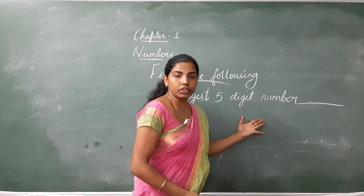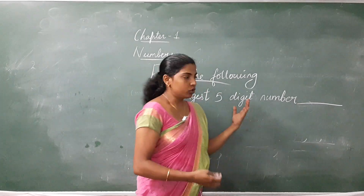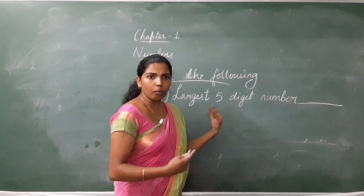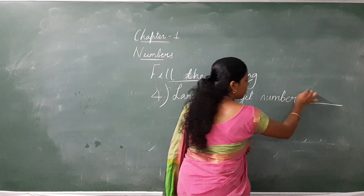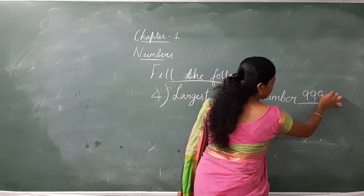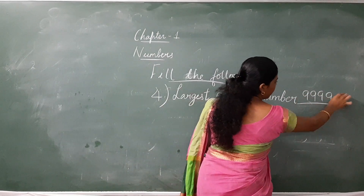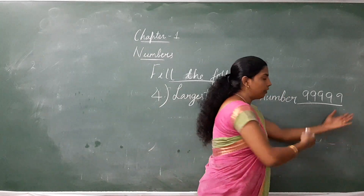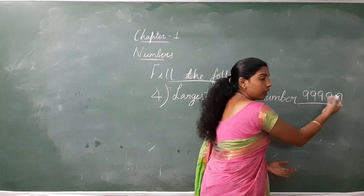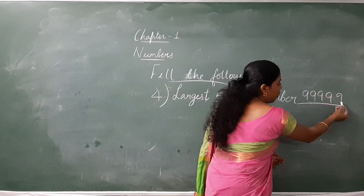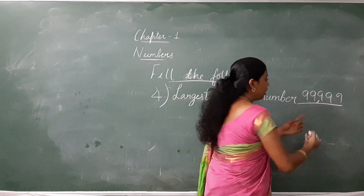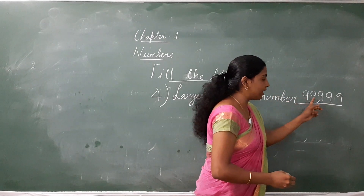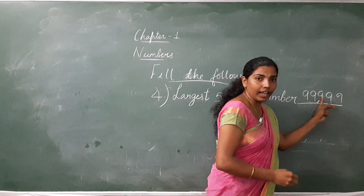Largest 5-digit number. To write the largest 5-digit number, write 9, how many times? 5 times. Now we have to read this number. For that we are going to put commas after each period: ones, tens, hundred, thousand, ten thousand. So the number is 99,999.